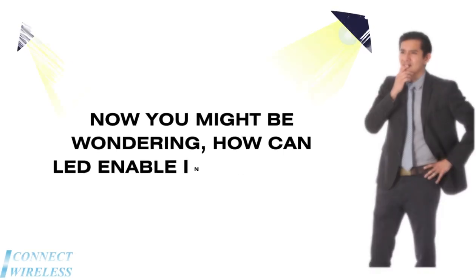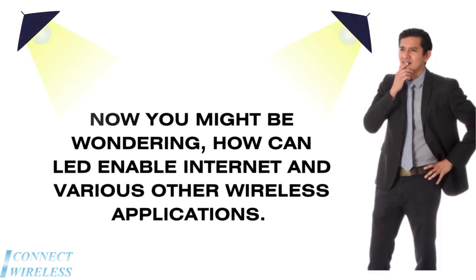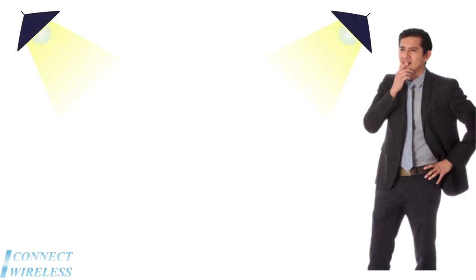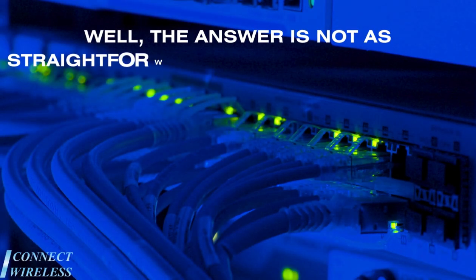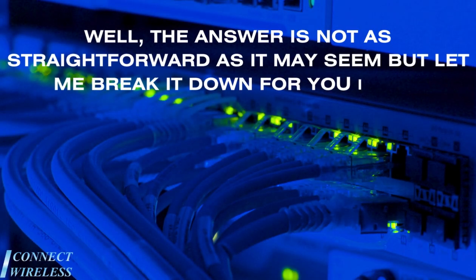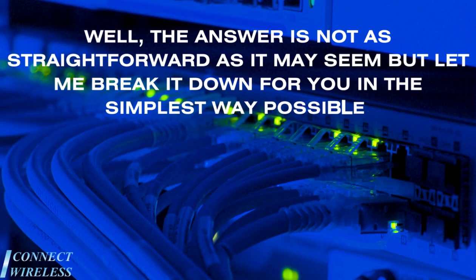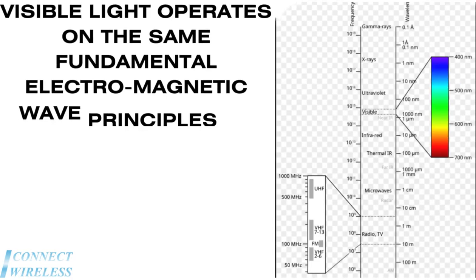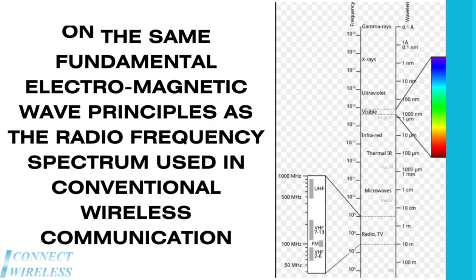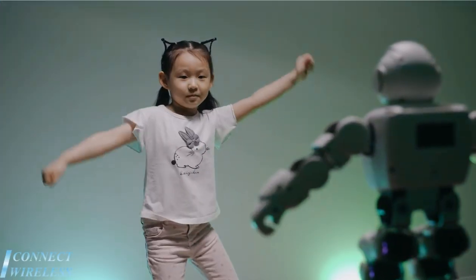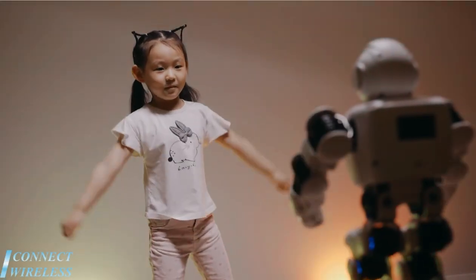You might be wondering: how can LED lights enable internet and various other wireless applications? The answer is not as straightforward as it may seem, but visible light operates on the same fundamental electromagnetic wave principles as the radio frequency spectrum used in conventional wireless communication.